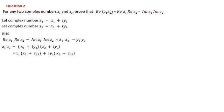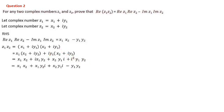Removing the bracket: x1·x2 + i·x1·y2 + i·x2·y1 + i²·y1·y2. Substituting i² = -1, this becomes x1·x2 + i·x1·y2 + i·x2·y1 - y1·y2. Grouping real and imaginary parts: real part = x1·x2 - y1·y2, and imaginary part = (x1·y2 + x2·y1)·i.